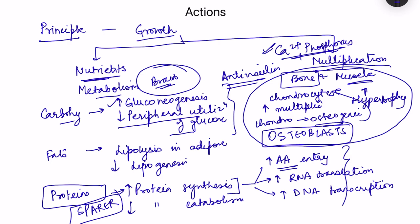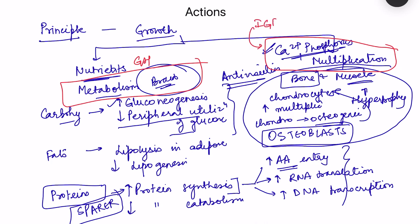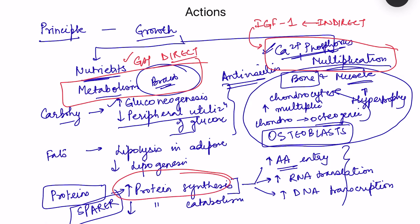Growth hormone acts via two pathways: direct actions on metabolism (on carbohydrates, fats, and proteins), and indirect actions via IGF-1 released from the liver, which mediates the growth effects. Protein synthesis is an exception — it is promoted by both growth hormone directly and by IGF-1.